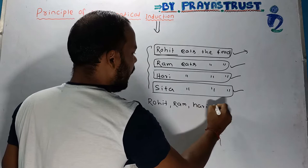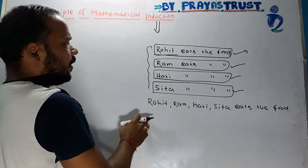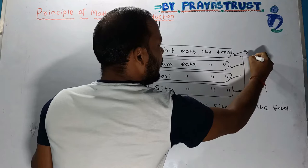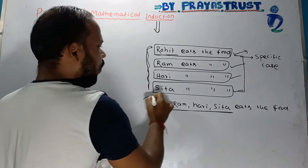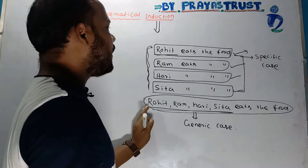Rohit, Ram, Hari, and Sita all eat food. Since all of them are human beings, we can combine all four statements into a single statement: all humans eat food. Each individual statement is a specific case, but when we combine them into one, that becomes a generic case.